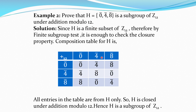We check the closure property by preparing the composition table for H = {0̄, 4̄, 8̄} in the heading row and column. The operation on Z₁₂ is addition modulo 12. So: 0̄+0̄=0̄, 0̄+4̄=4̄, 0̄+8̄=8̄. Since addition is commutative, we can fill the column directly. Then 4̄+4̄=8̄. And 4̄+8̄=12̄=0̄ in Z₁₂. So 8̄+4̄=0̄ by the commutative property.